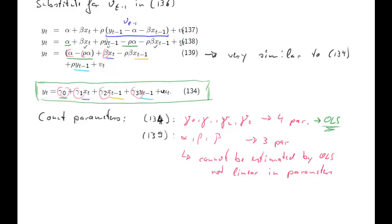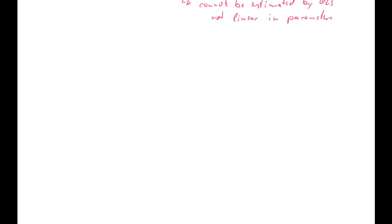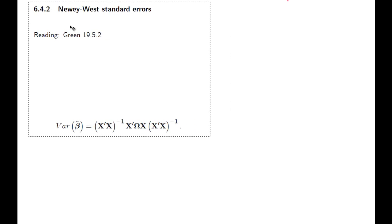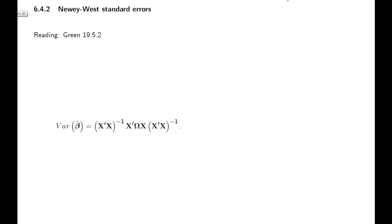Now I thought I may as well continue and talk about Newey-West standard errors — that was section 642. This is some additional reading; I think that's the best reading on Newey-West standard errors. The sort of problem with Wooldridge is that Wooldridge does it in observation-wise form, which is by far not as convenient as the matrix form.